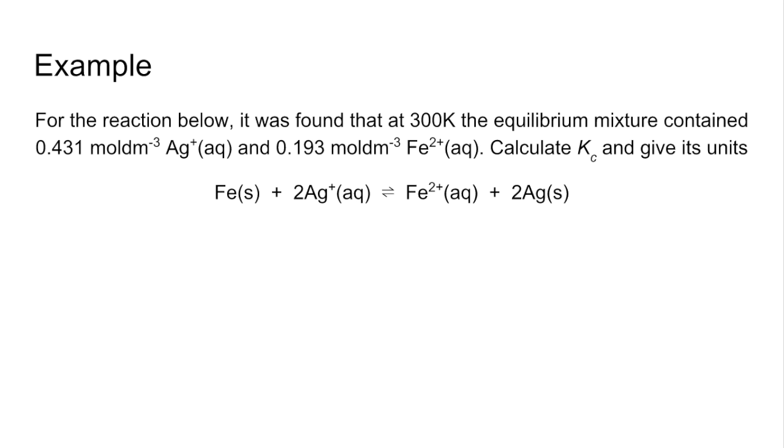So we've got this equilibrium below and it was found that at 300 Kelvin, the equilibrium mixture contained that many moles of silver ions and that many moles of Fe2+ ions. We've got to calculate Kc and give the units.